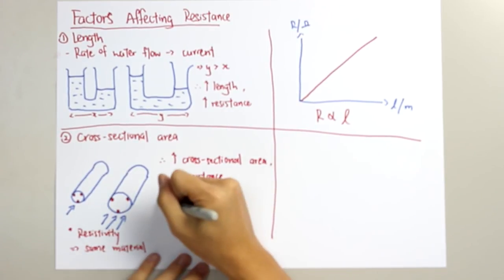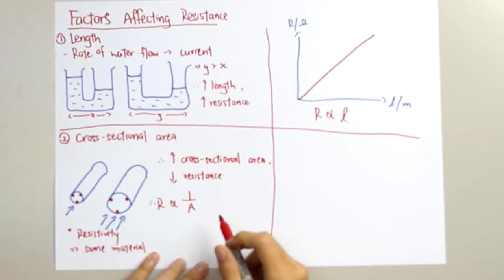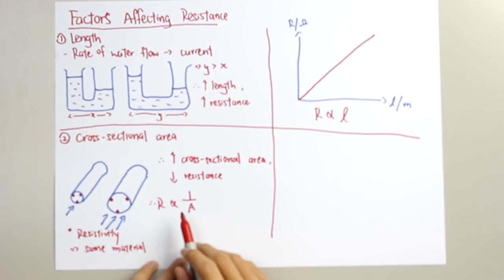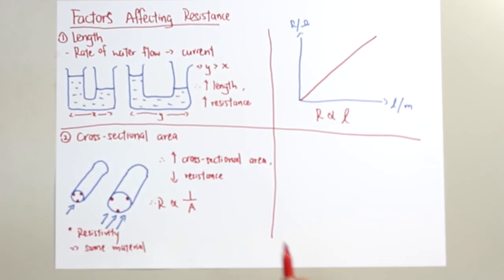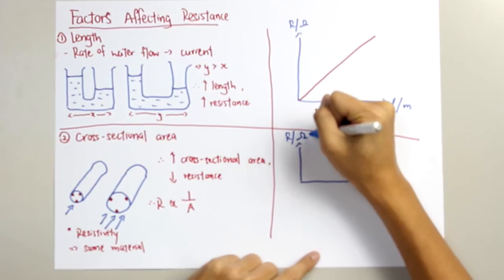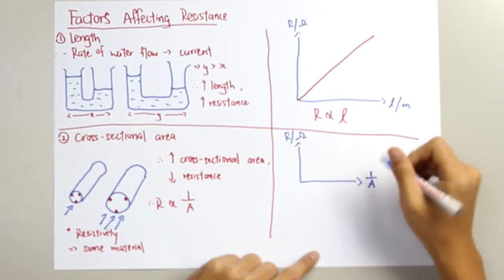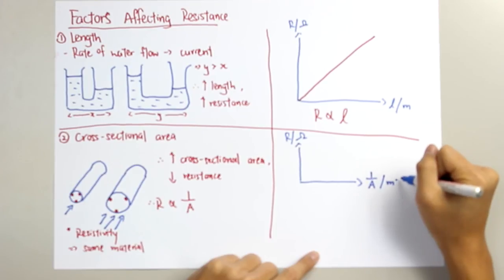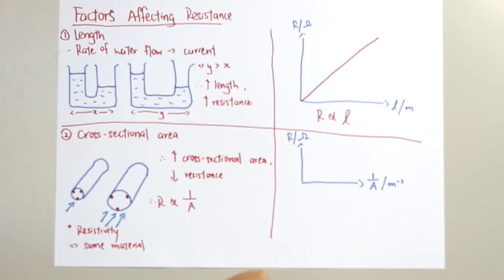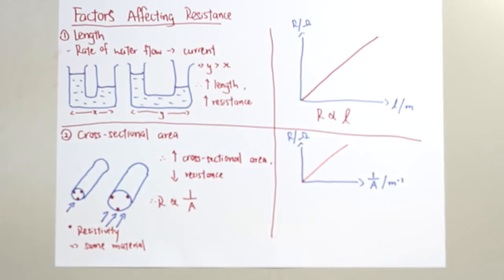And the relationship is R is directly proportional to 1 over cross-sectional area. Or you can say R is inversely proportional to the cross-sectional area. Now, for the graph, there are two ways to plot this graph. The first way, we label the y-axis as R and the x-axis as 1 over A, which is meter per square. Since we say that R is directly proportional to 1 over A, therefore, it cuts through the origin with a straight line.